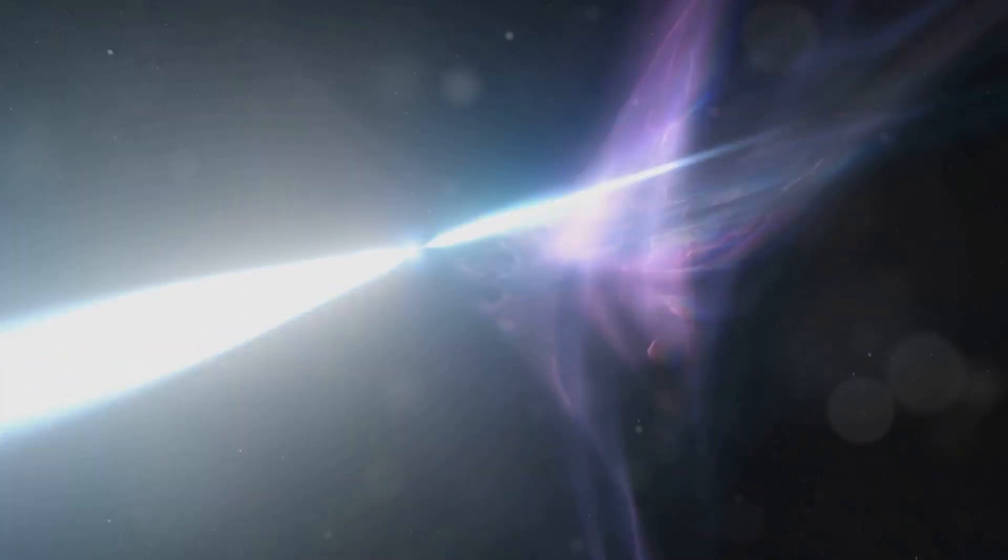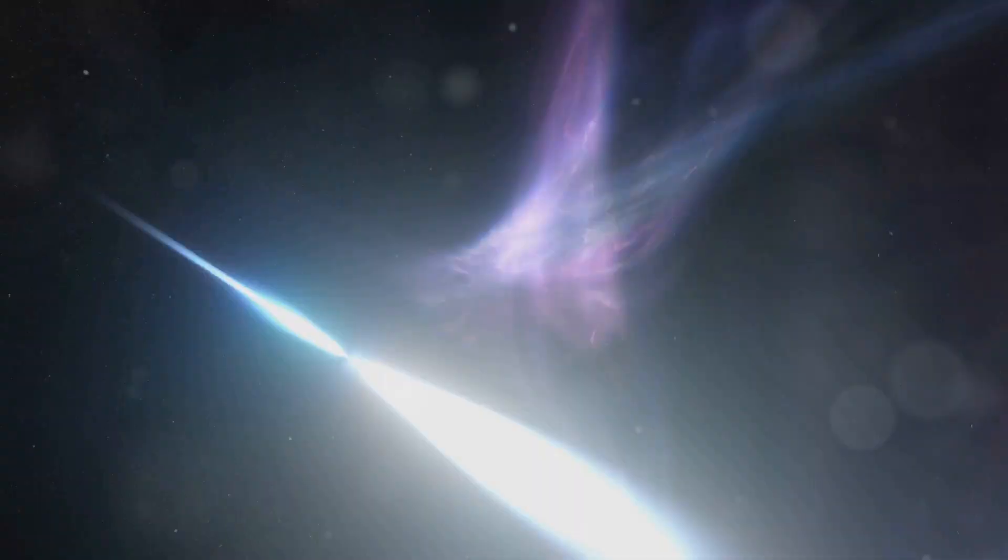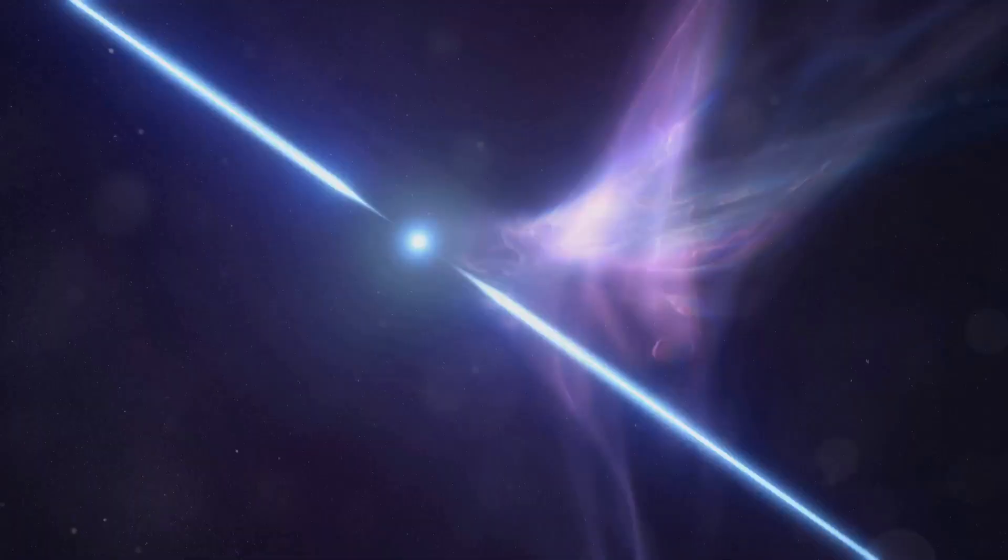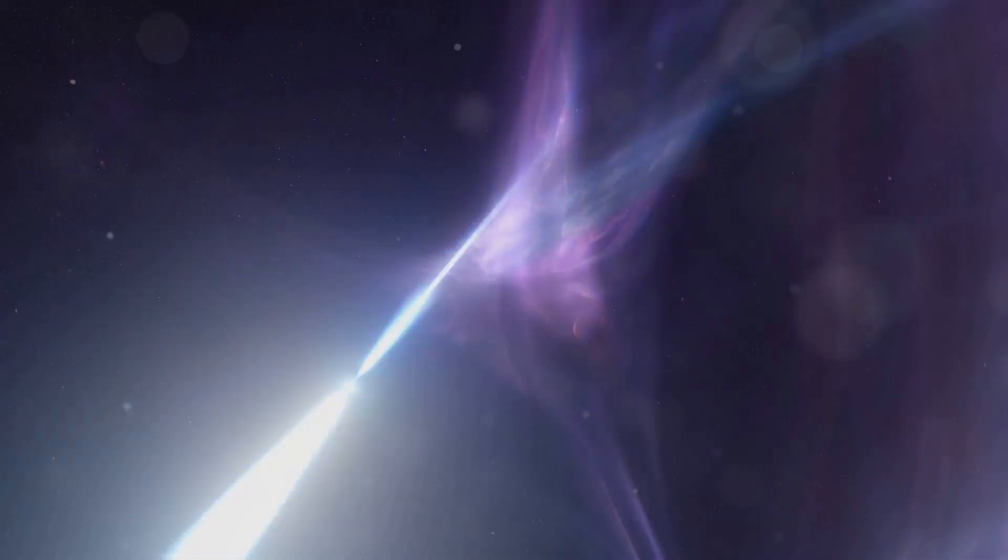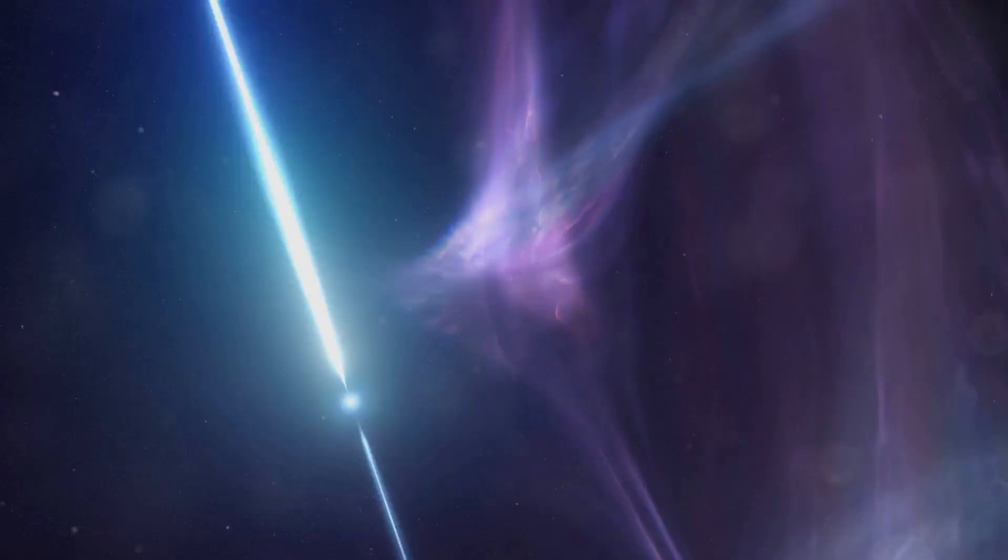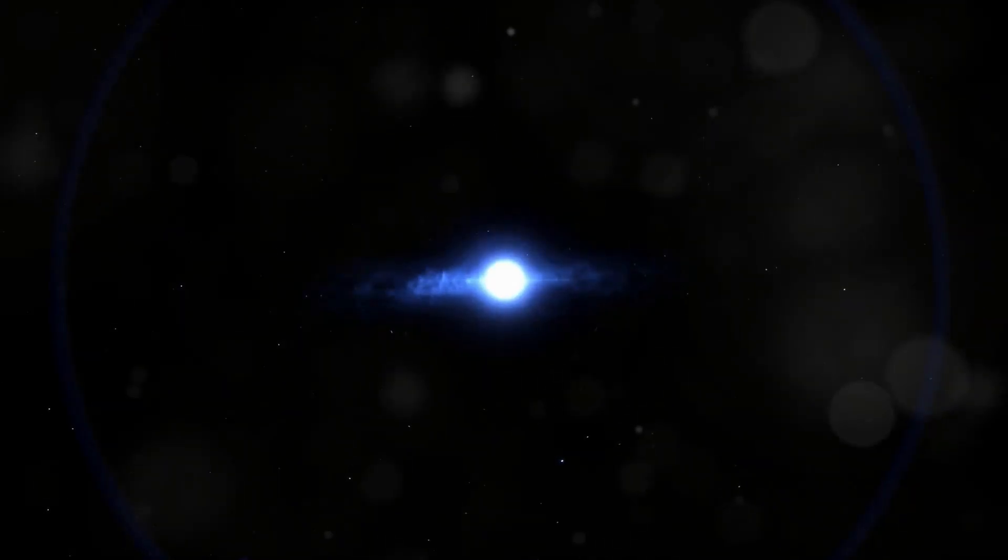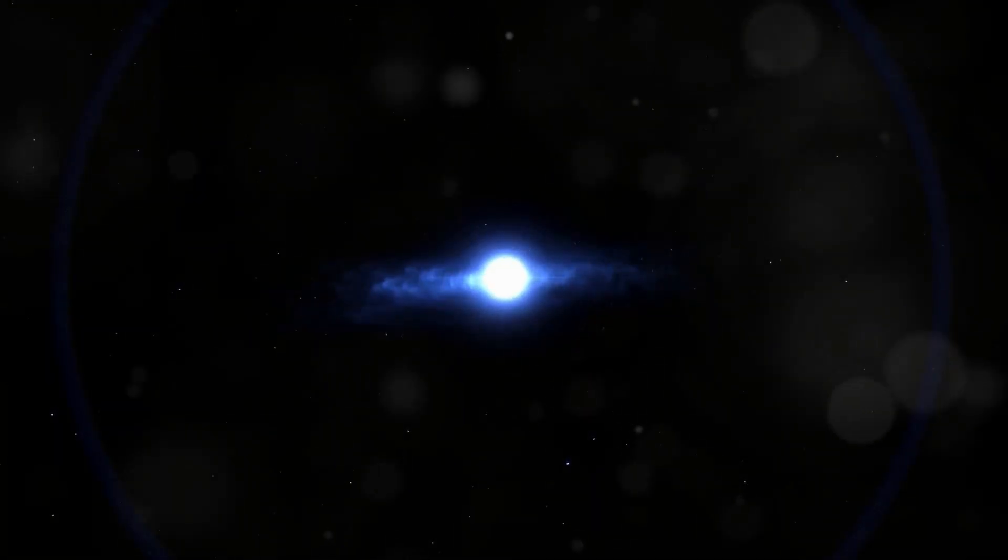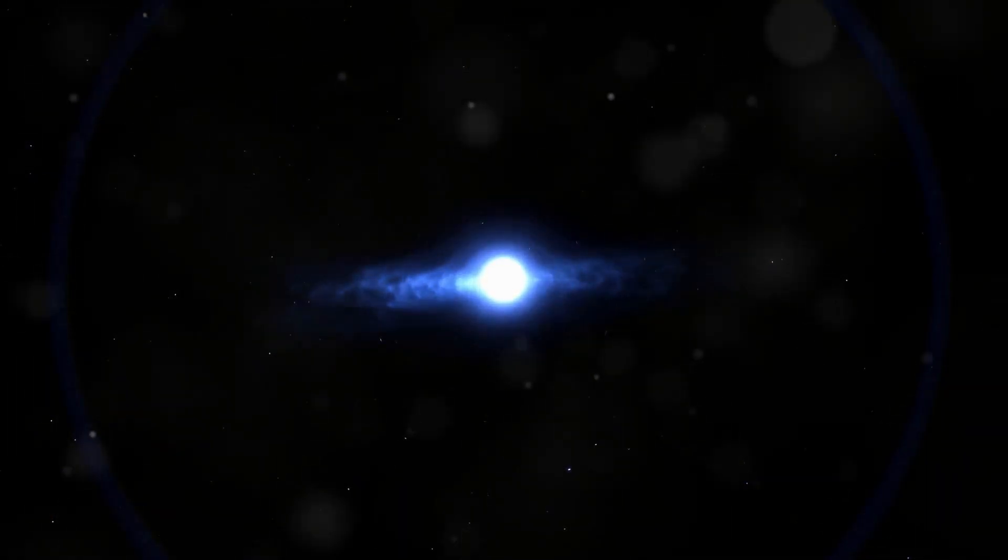Neutron stars are another source. These incredibly dense remnants of supernova explosions are the collapsed cores of massive stars squeezed down to the size of a city. Despite their small size, they have immense gravitational fields. They are so dense that a teaspoonful would weigh billions of tons. This incredible density leads to some of the most extreme physical conditions in the universe.